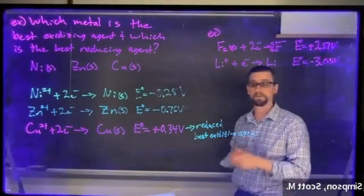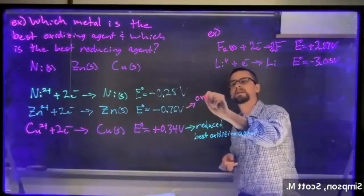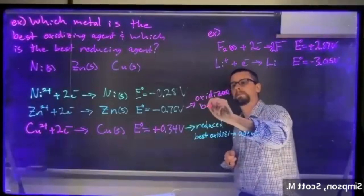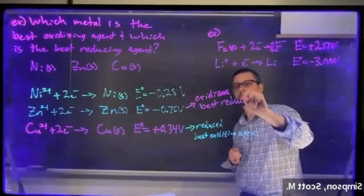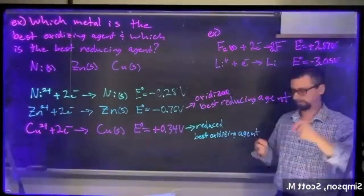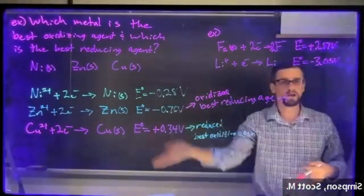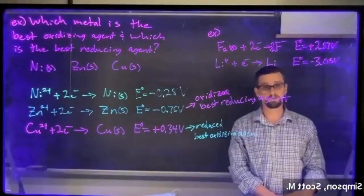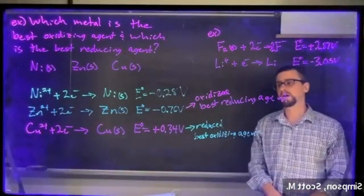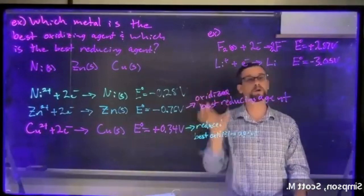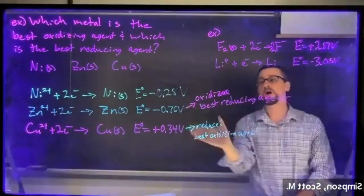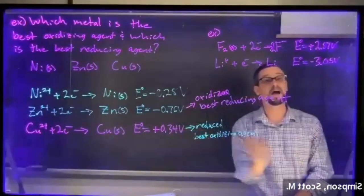All you really have to do is look at the values of the standard reduction potential, and you can figure out which one is going to be the best oxidizing agent or best reducing agent. The toughest thing is to keep track of what's being reduced and what's being oxidized. Remember, what is being oxidized is a reducing agent. Whatever is being reduced is an oxidizing agent. It tends to be confusing for people.